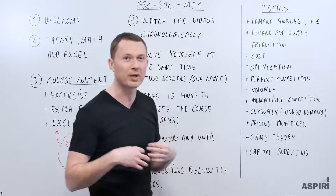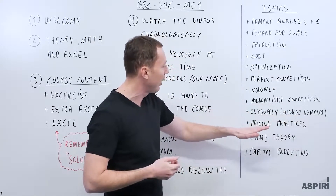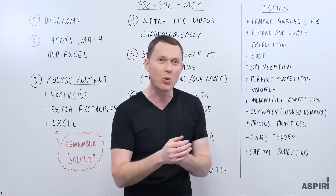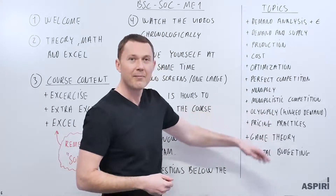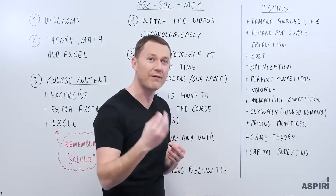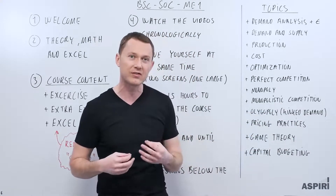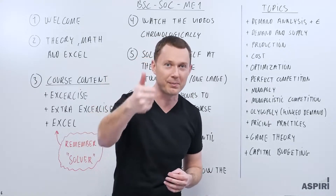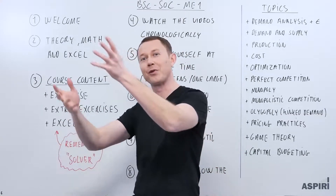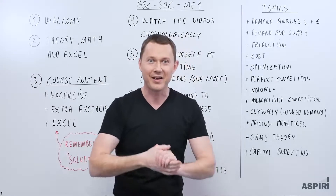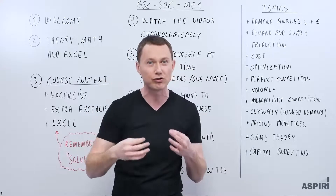Then we have the more difficult ones, sometimes called complex optimization: oligopoly with the kinked demand curve, or pricing practices — when you have two markets taking uniform prices or different prices. One of these will come almost every year and will be the challenging part of your exam. I'll put extra emphasis on these two subjects — I'll solve them in Excel, solve them on the board, do illustrations in Excel, do illustrations on the board, and give you good Excel recipe sheets where you can just plot in the numbers.